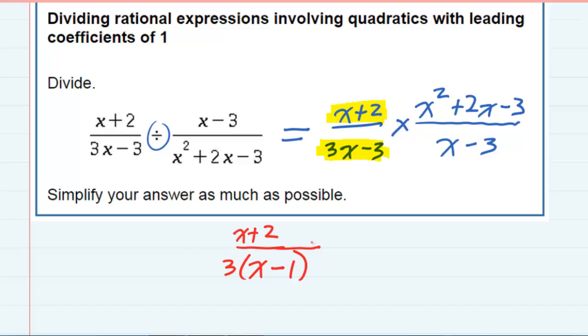So we have factored this first fraction, and that's represented down here in red, and we need to do the same thing for this second fraction. Looking at the top, that's a trinomial. So the leading coefficient is 1.